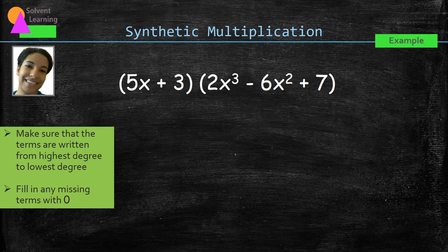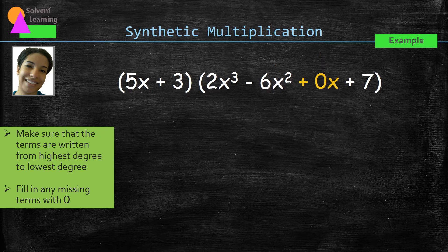Now looking at the trinomial, the first term there has a degree of three. The next term has a degree of two, but we're missing a first degree term. We skip straight down to the constant term that has a degree of zero. So we need to fill in that space for the term that has a degree of one. So now we have that missing term filled in with a zero for the coefficient.